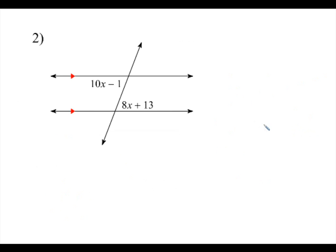Number two: I noticed this angle here and this angle right here are alternate interior angles. So if they're alternate interior, that means they are equal. So I know that 10x minus 1 is going to equal 8x plus 13. Solving for x: minus 2x on both sides gives 2x, add 1 on both sides gives 14, divide by 2, so x is going to equal 7.